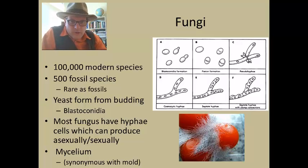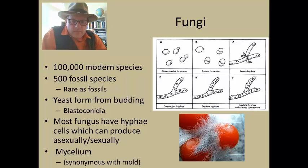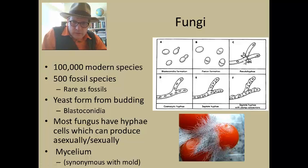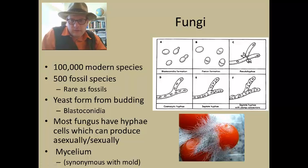There are over 100,000 modern species of fungi known, but when you look at the fossil record there are only about 500 fossil species — fungi are pretty rare as fossils. When trying to find fungi in the fossil record, we look at single-celled fossils such as yeast forming blastoconidia from budding, which form interesting structures where one cell is smaller than the other. We also look for hyphae — whether they have septa or not — and for evidence of mycelium, the technical name for mold.